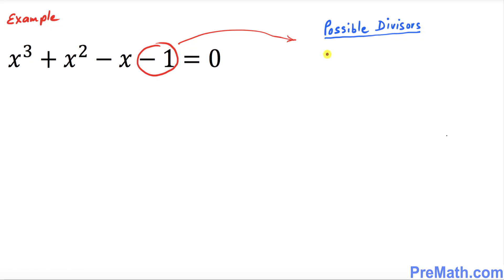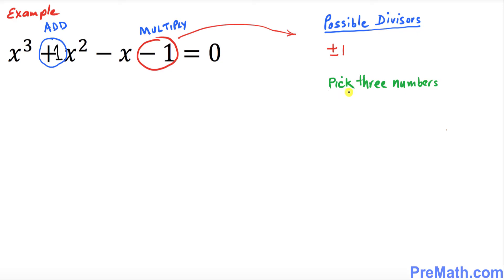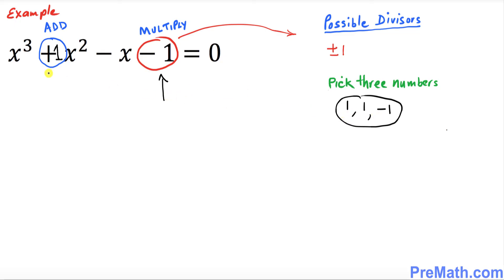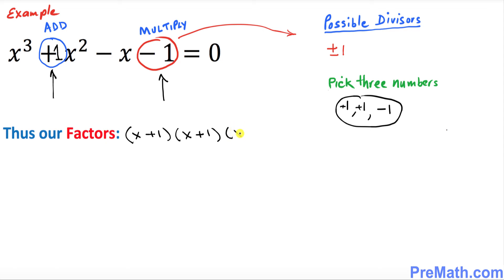Finally, in this last example, look at the last number which is negative 1. The possible divisors are simply positive or negative 1. We are going to pick three feasible numbers that when added give positive 1 and when multiplied give negative 1. The numbers I'm going to pick are 1, 1, and negative 1. If you multiply 1 times 1 times negative 1 you get negative 1, and if you add them you get positive 1. So our factors are x plus 1 times x plus 1 times x minus 1.